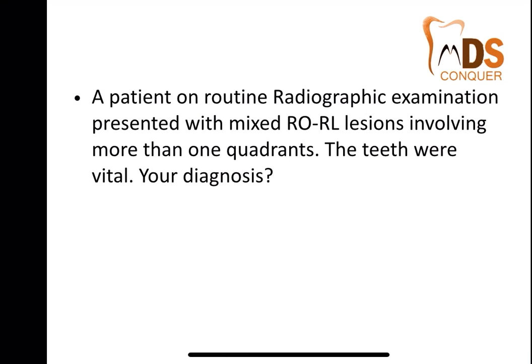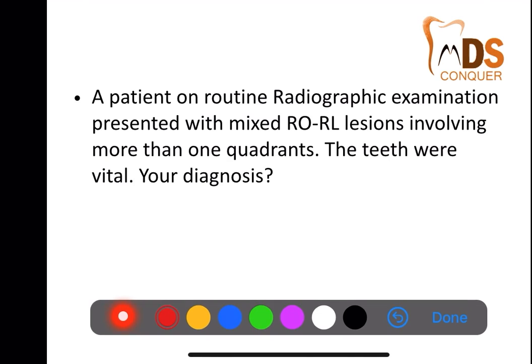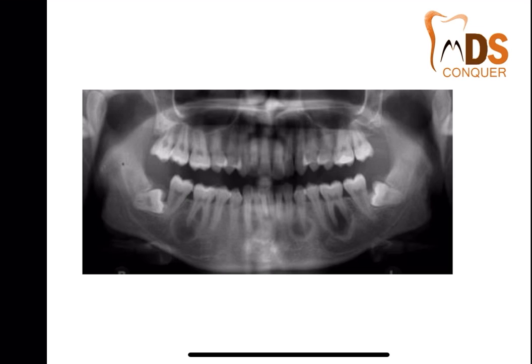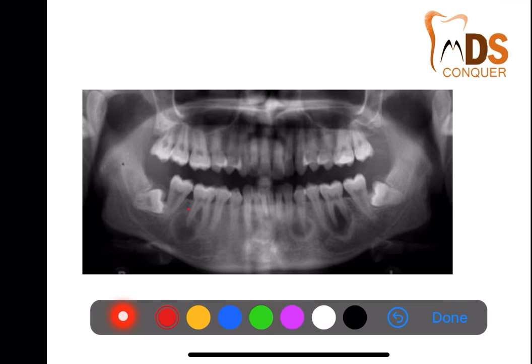Coming to the first case: a patient presented to a clinic and on routine radiographic examination had a mixed radiopaque-radiolucent lesion involving more than one quadrant. The very important point to note is the teeth were vital — there was no problem with the teeth. Looking at the radiograph, the teeth are vital and you can see some lesions present involving the quadrants. There is no clinical symptom being given by the patient; this was seen as a radiographic finding only.